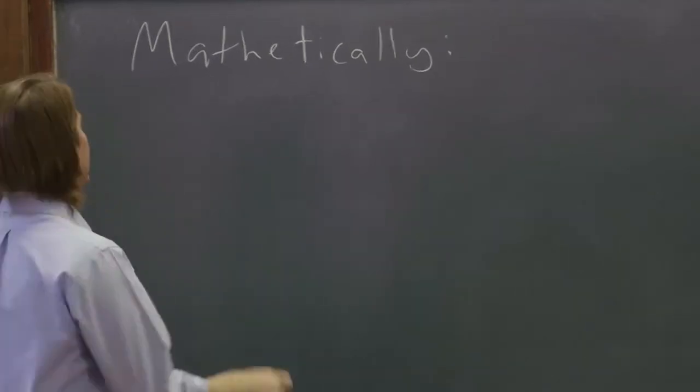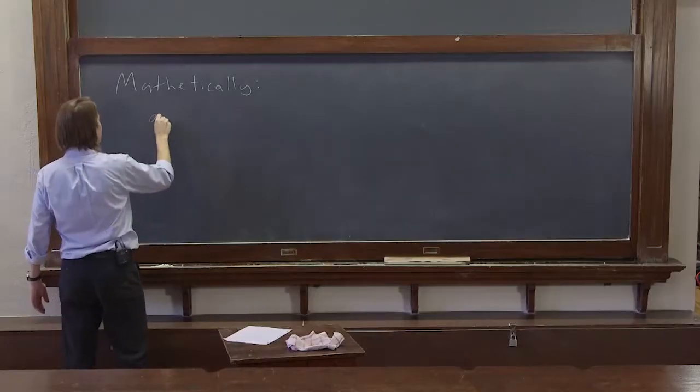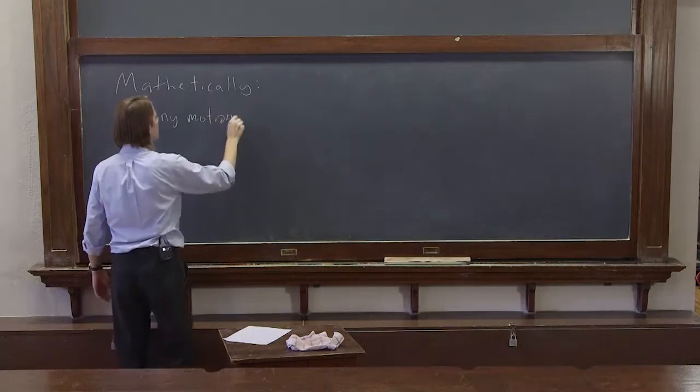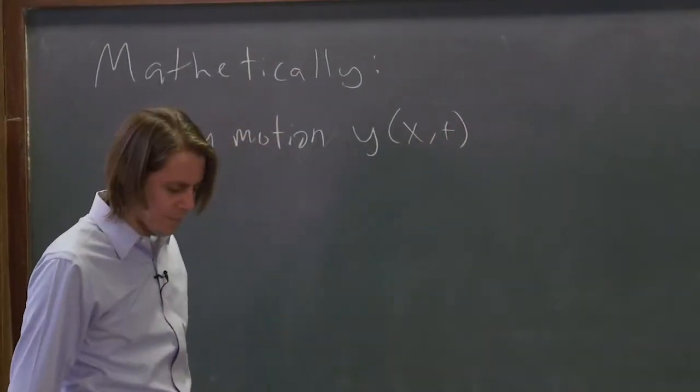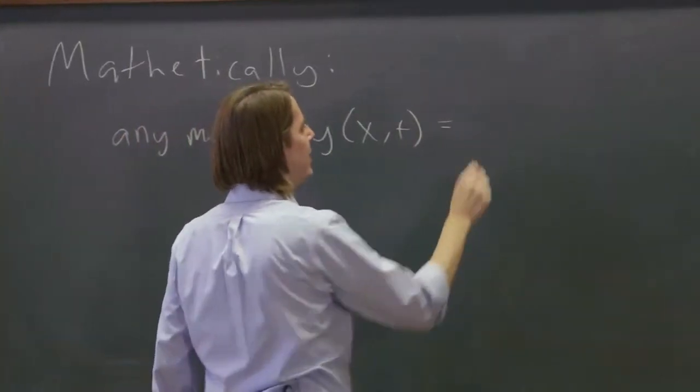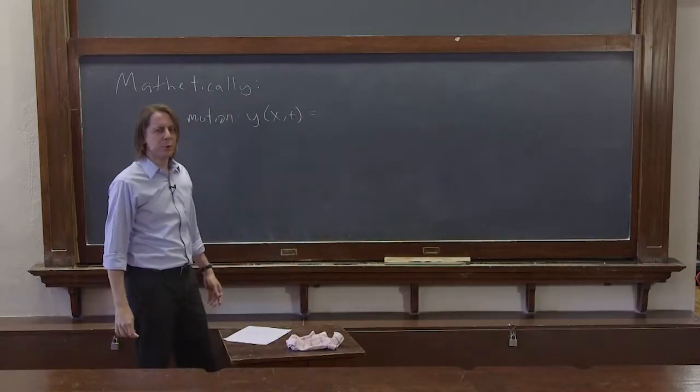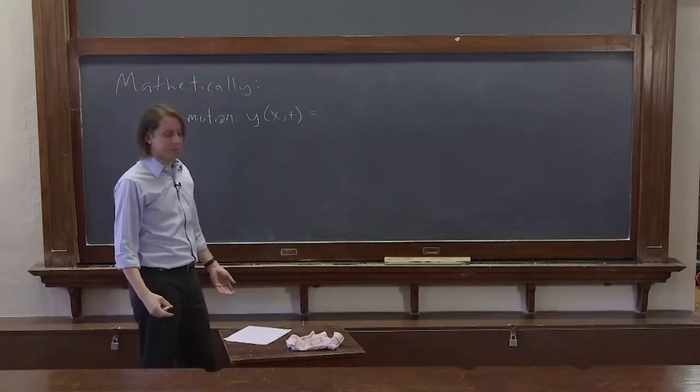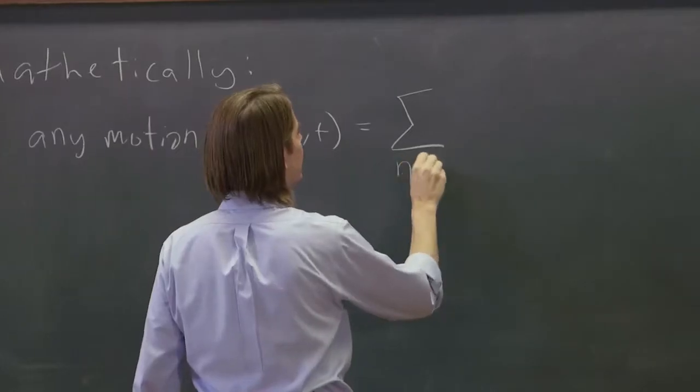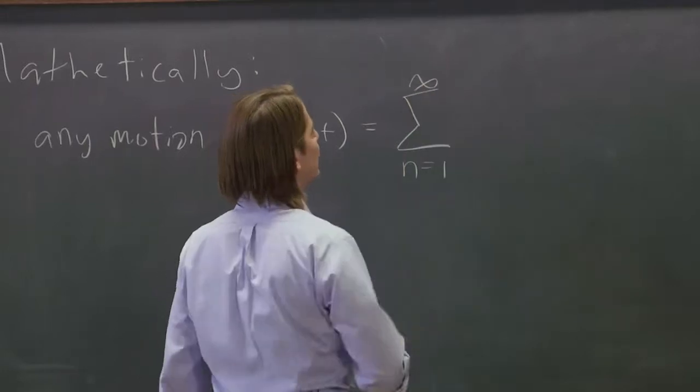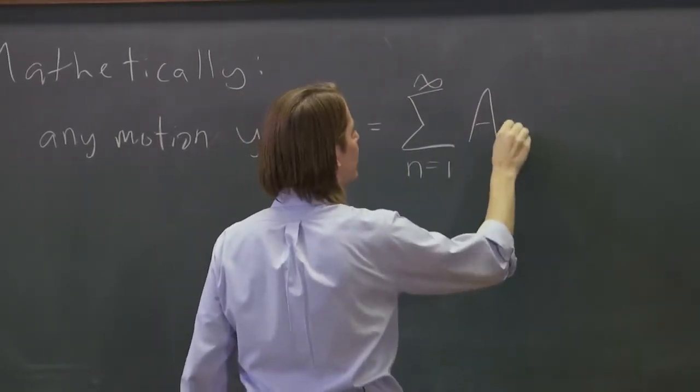He's saying that basically any motion, y of x and t, can be described as a superposition of the normal modes. And you have to use all of them. So we're going to write it as a sum from n equals 1 to infinity of all the normal modes.